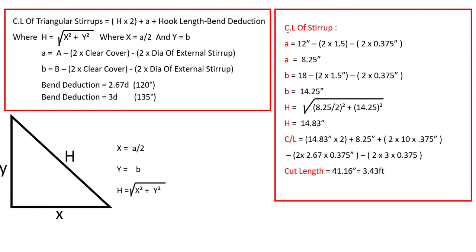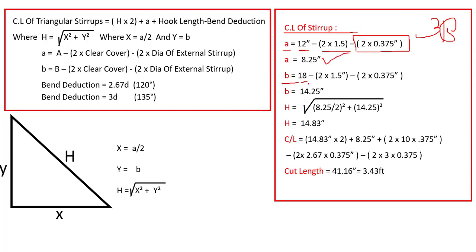Now putting in the data: a = 12 inch minus 2×1.5 inch (concrete cover) minus 2×0.375 inch (dia of external stirrup), so small a = 8.25 inch. And b = 18 inch minus 2×1.5 inch minus 2×0.375 inch, so small b = 14.25 inch.